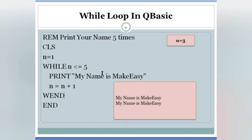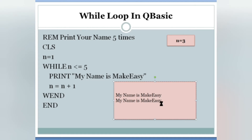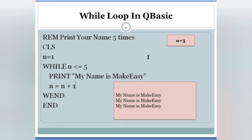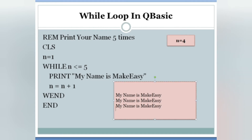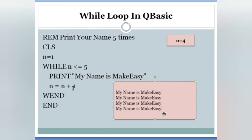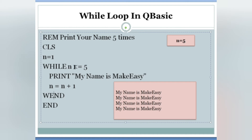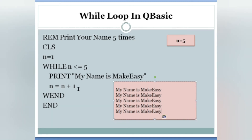N is three: three less than or equals to five — condition true. Print it three times. N equals to N plus one: three plus one is four. WEND — before it ends, check the condition again. N is four: four less than or equals to five — condition true, print again. N equals to N plus one: four plus one is five. WEND — check again. Five less than or equals to five — condition is true because five equals five. Print, and N becomes six.